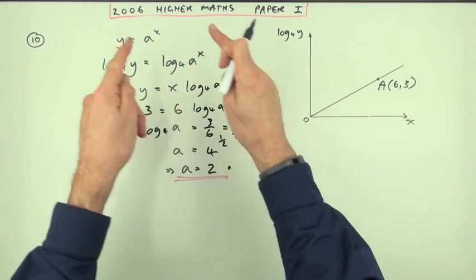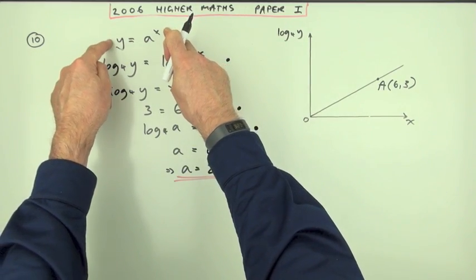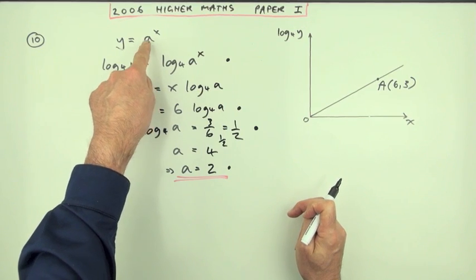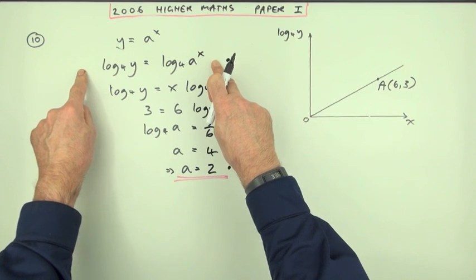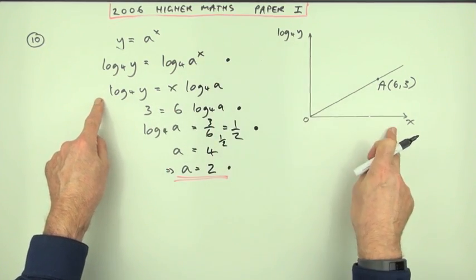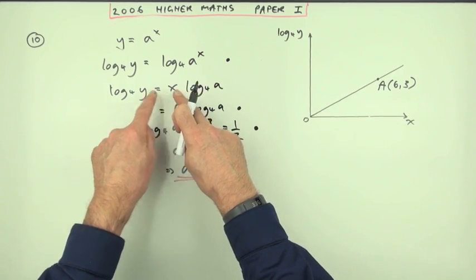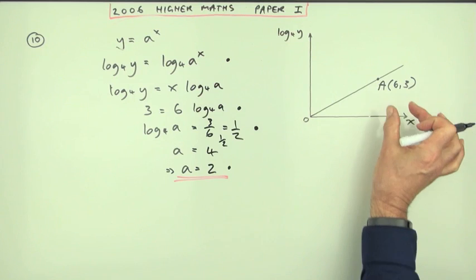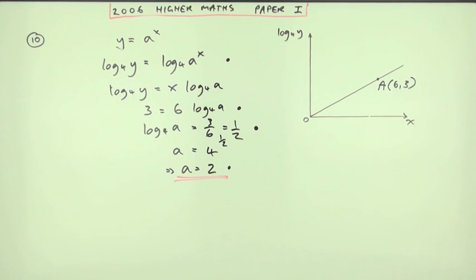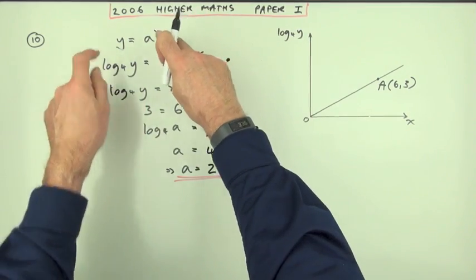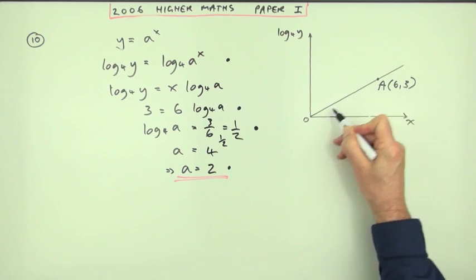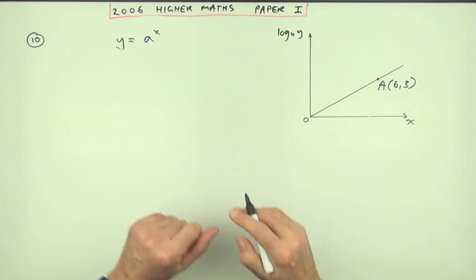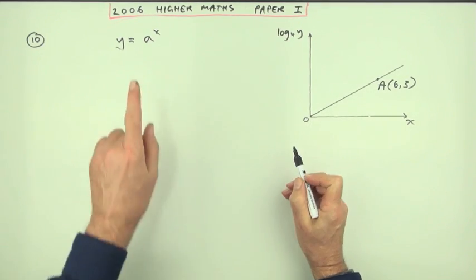Those two methods were essentially the same in that I'm not really considering the graph. The only purpose of that graph was to give me these two numbers. I was either doing a direct substitution for x and y to find the only remaining unknown, or I manipulated the equation to get it in the form of the two variables to make it look like x's and log y's, so I could then substitute those two numbers in.